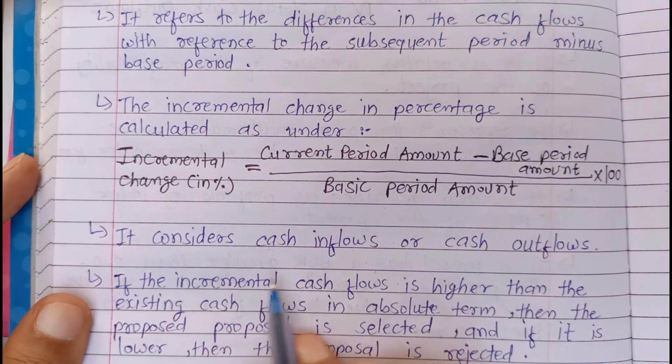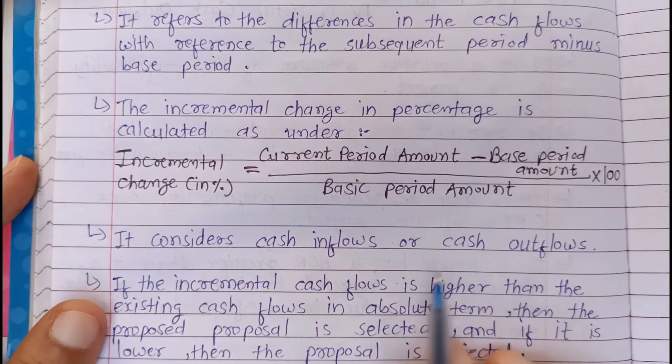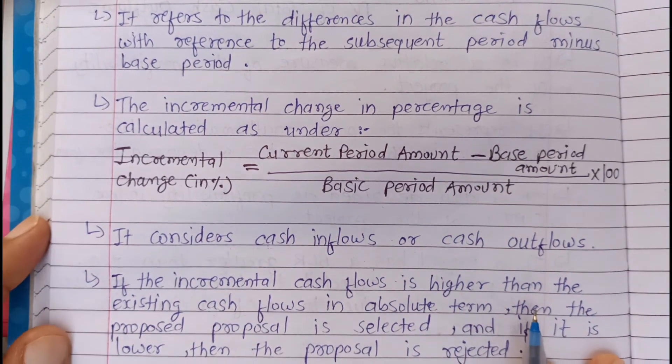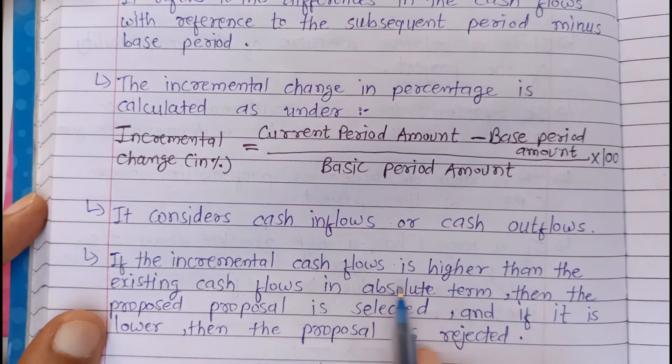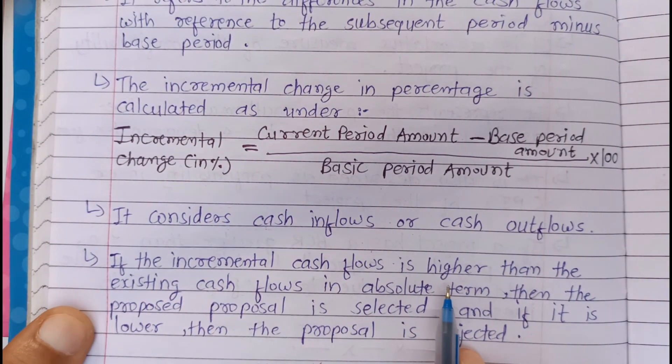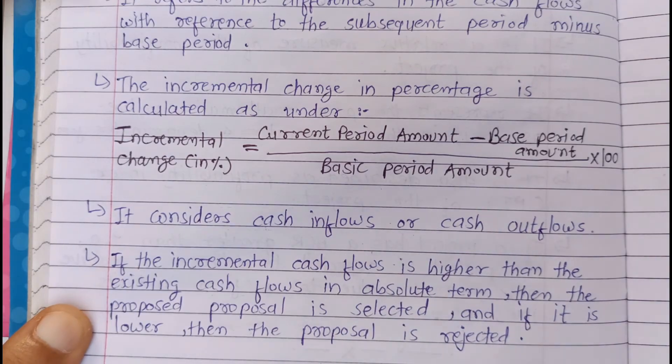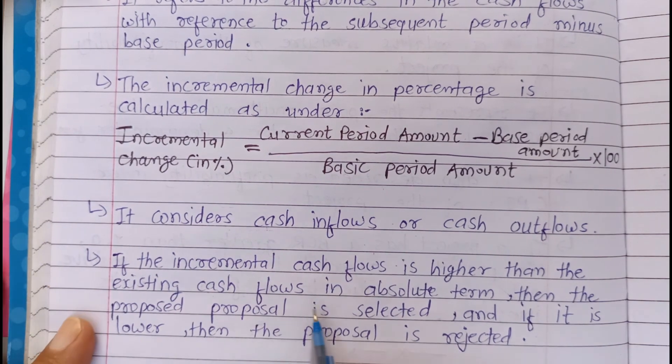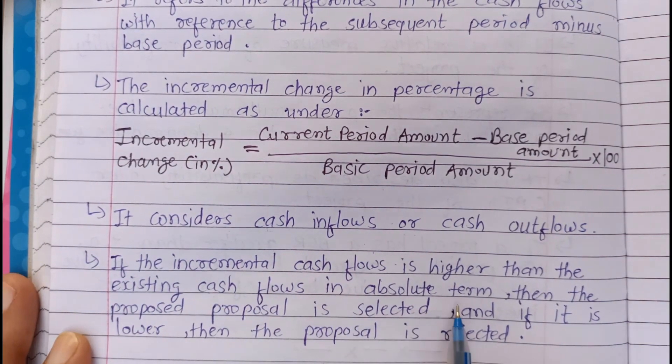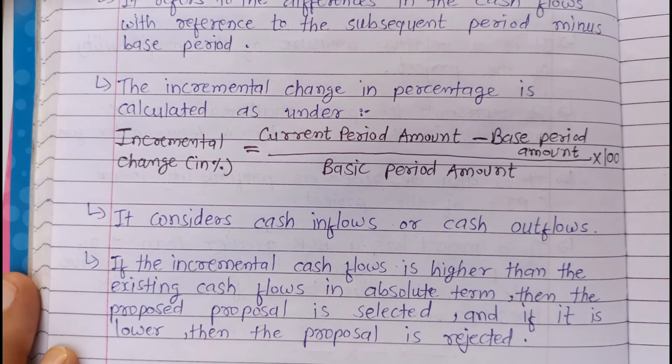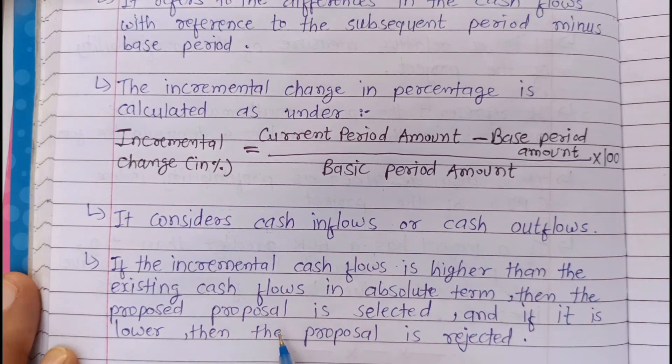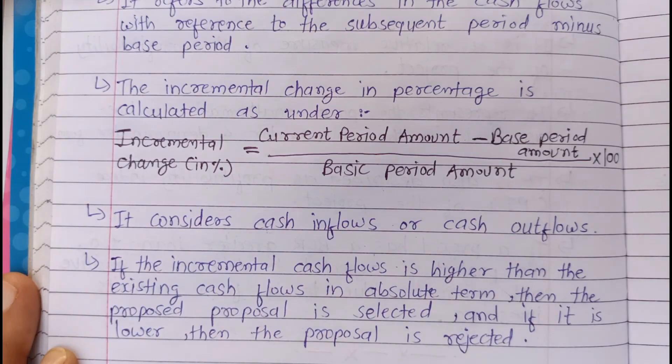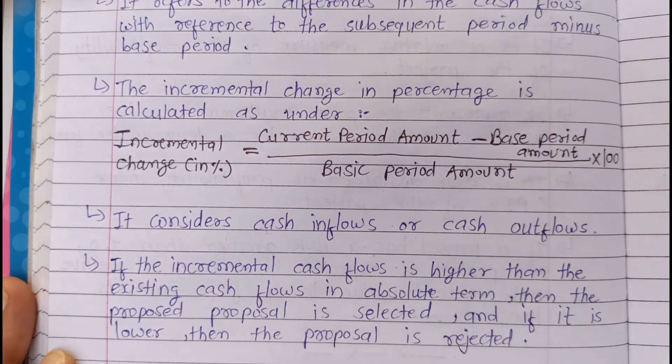It considers cash inflows or cash outflows. It looks at how much cash is coming in or how much cash is going out. If the incremental cash flow is higher than the existing cost in absolute terms, then the proposed proposal is selected. The proposal that has been proposed is chosen.